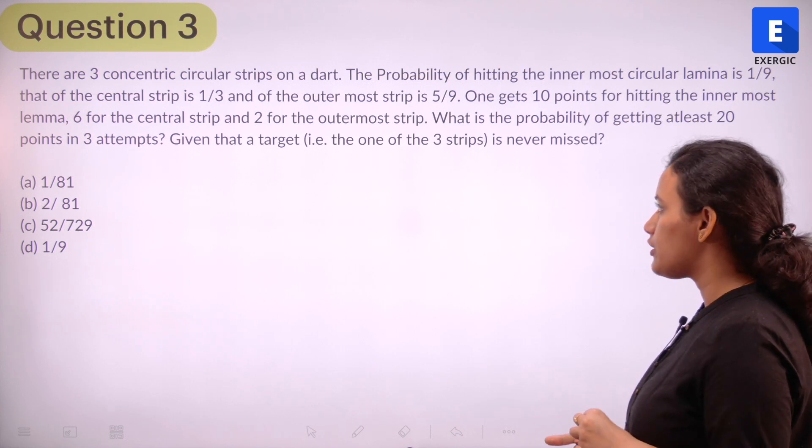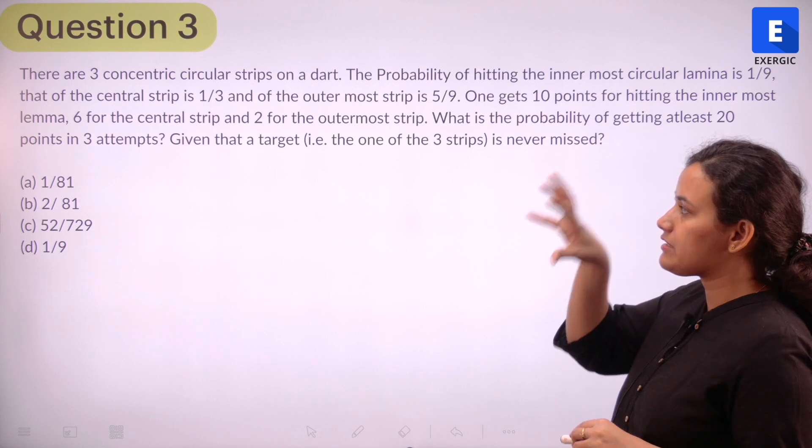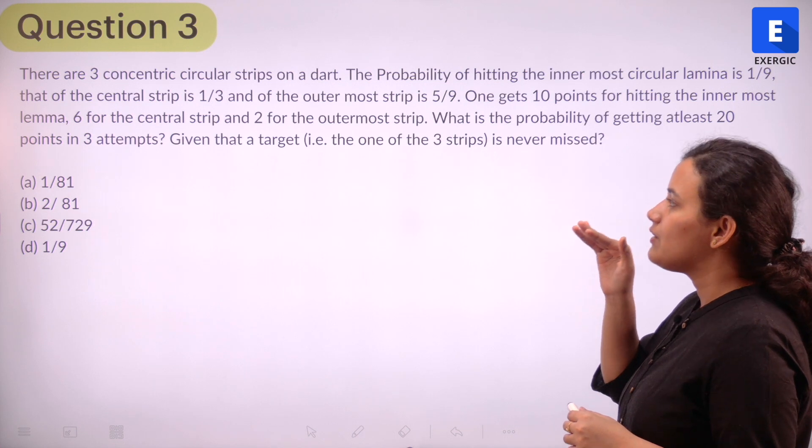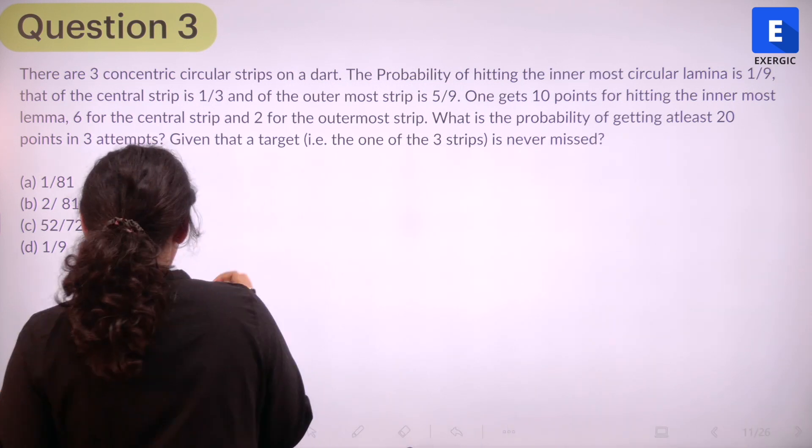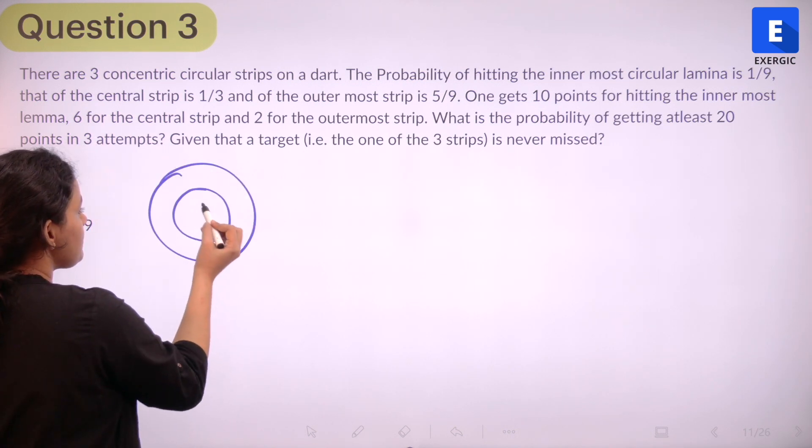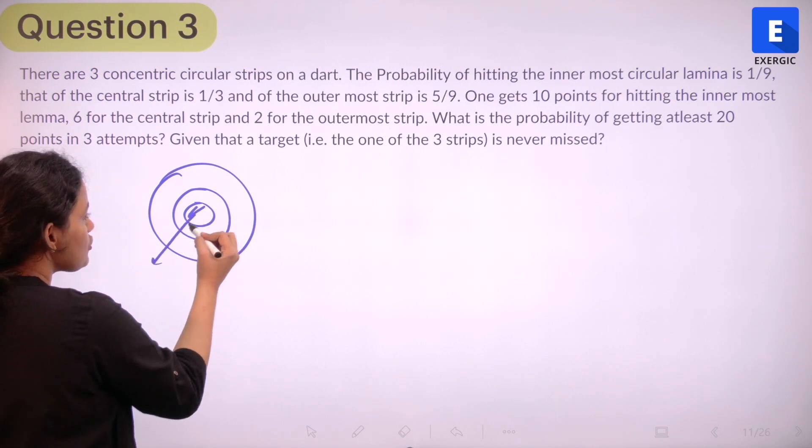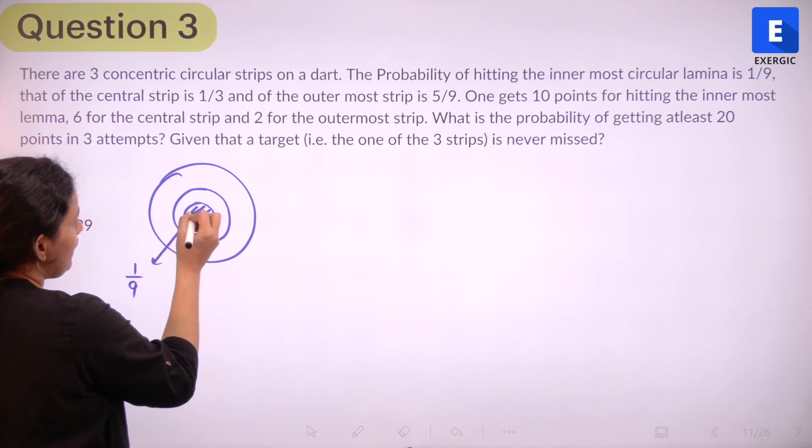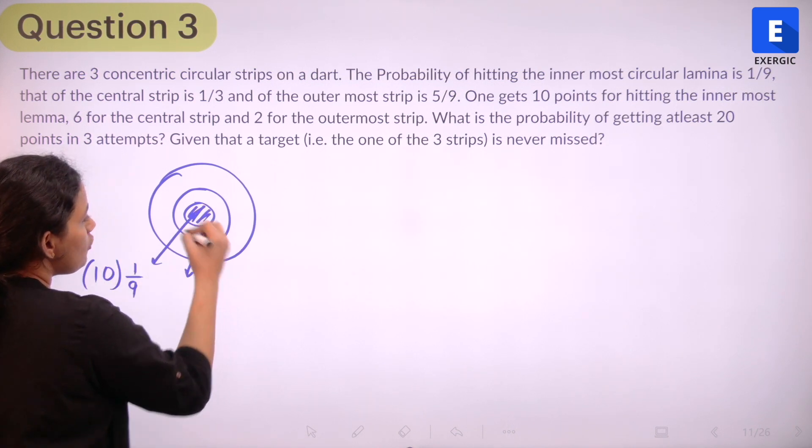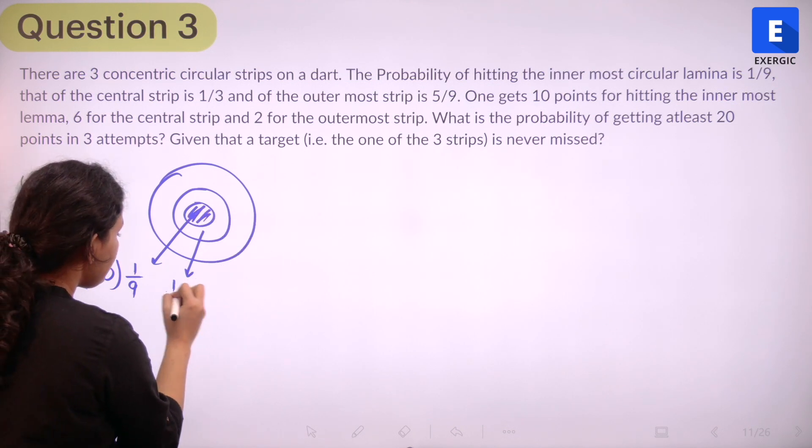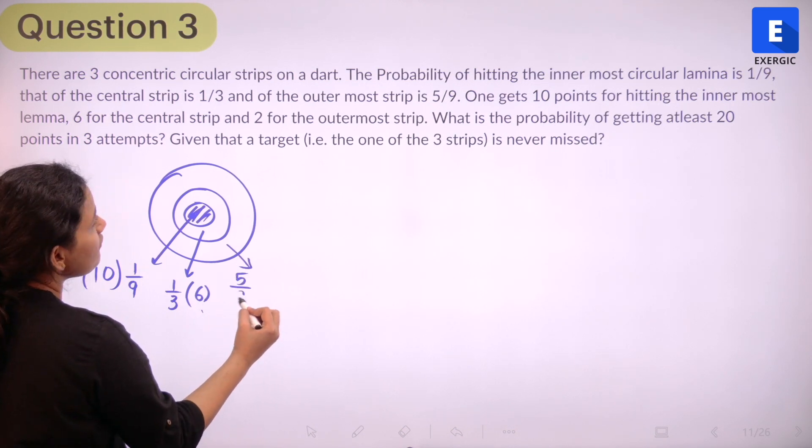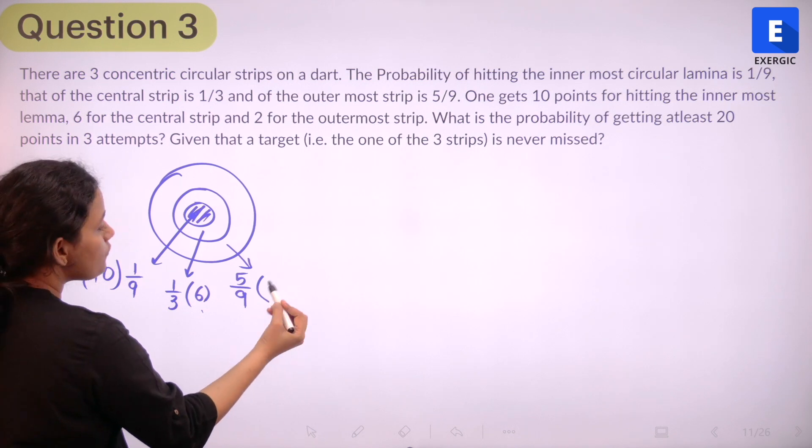So we have three concentric circular strips and the probability of hitting in the three strips has been given. So if you hit the center, it is 1 by 9. The central part 1 by 3 and outermost is 5 by 9. So if I think about the dart or the strips to be in this manner, if you hit this innermost part, the probability is 1 by 9 and you get 10 points. If you hit the middle portion, the probability is 1 by 3 and you get 6 points. And if you hit the outermost part, the probability is 5 by 9 and you get 2 points.